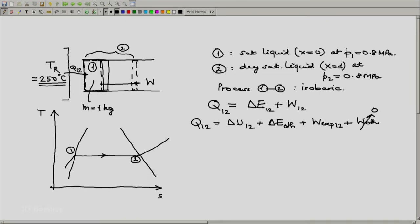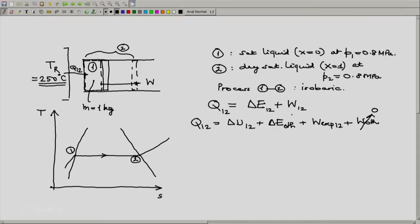Similarly, there is no mention of the system being accelerated, decelerated or moving up and down. So let us assume that change in other components of energy other than the thermal energy delta U12 are also 0. So we finally end up with delta U12 plus W expansion 12 on the right hand side.